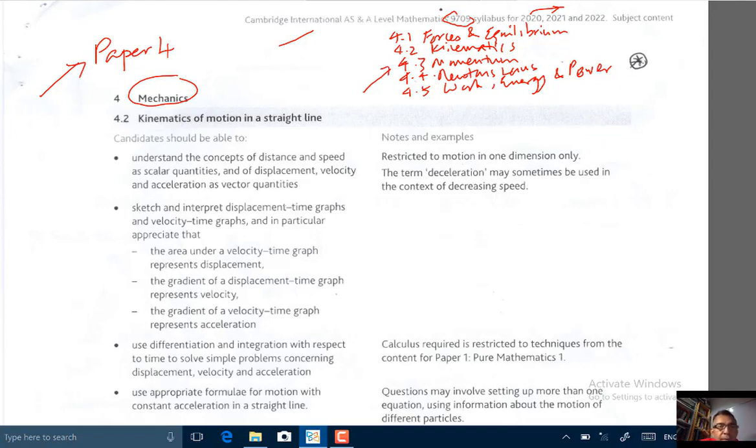The topics: first off we have forces and equilibrium, 4.1 is forces and equilibrium. 4.2, kinematics, motion in a straight line. 4.3 is momentum, that's the addition, I'll say more about it in a minute. 4.4 we have Newton's laws of motion and 4.5 we have work energy and power.